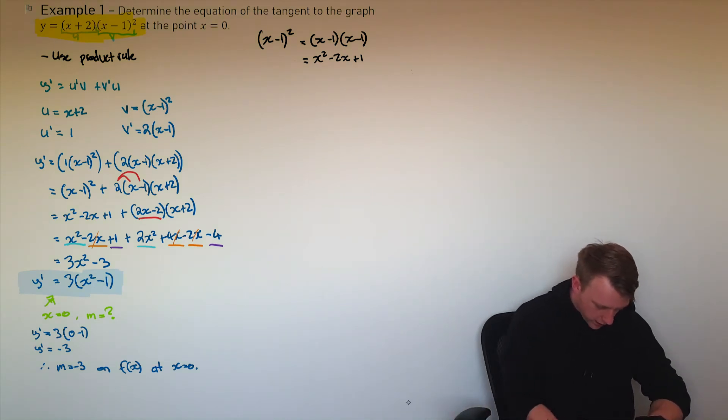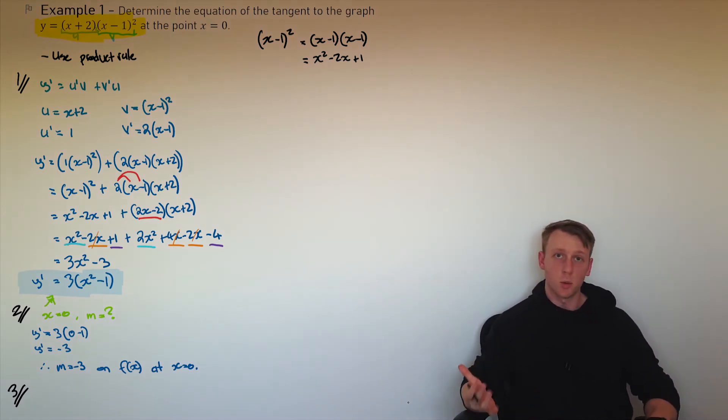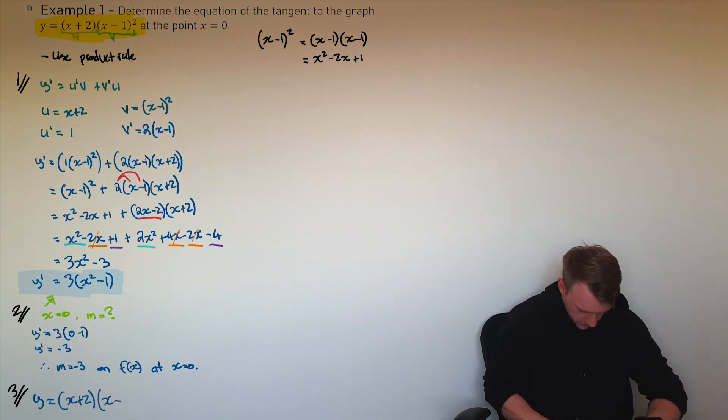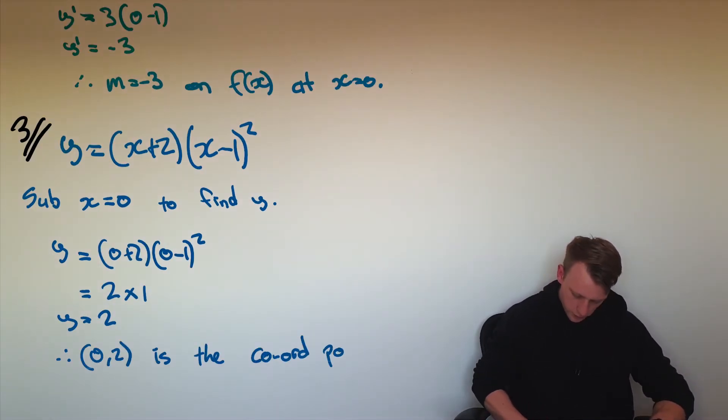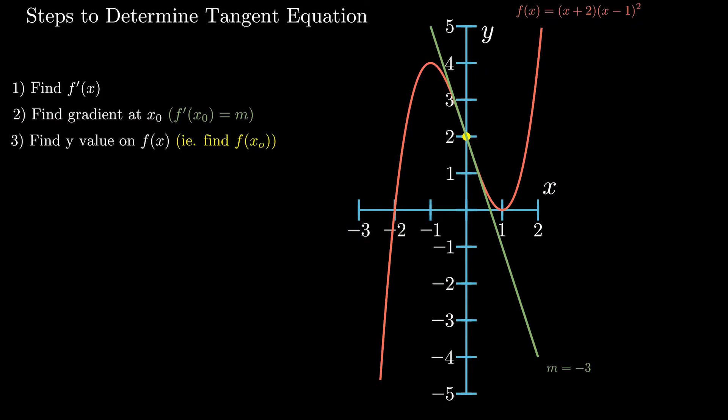So I'm just going to rewrite it out. Okay, by the way, here was step one to find the derivative. Here is step two to find the value of the gradient. Here's step three to determine the y value. And so we can determine the coordinate point being x equal to 0, y equal to 2.